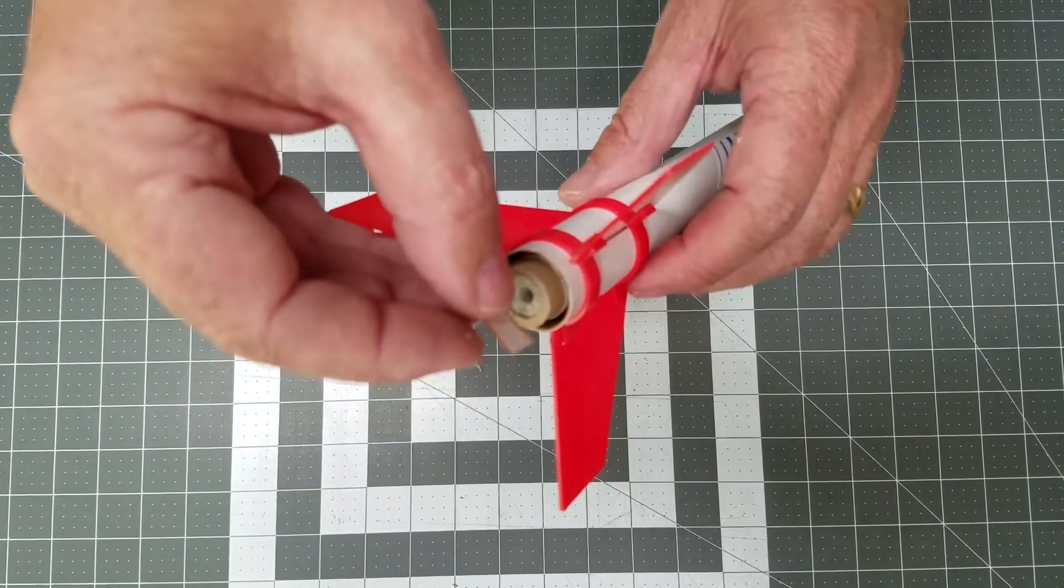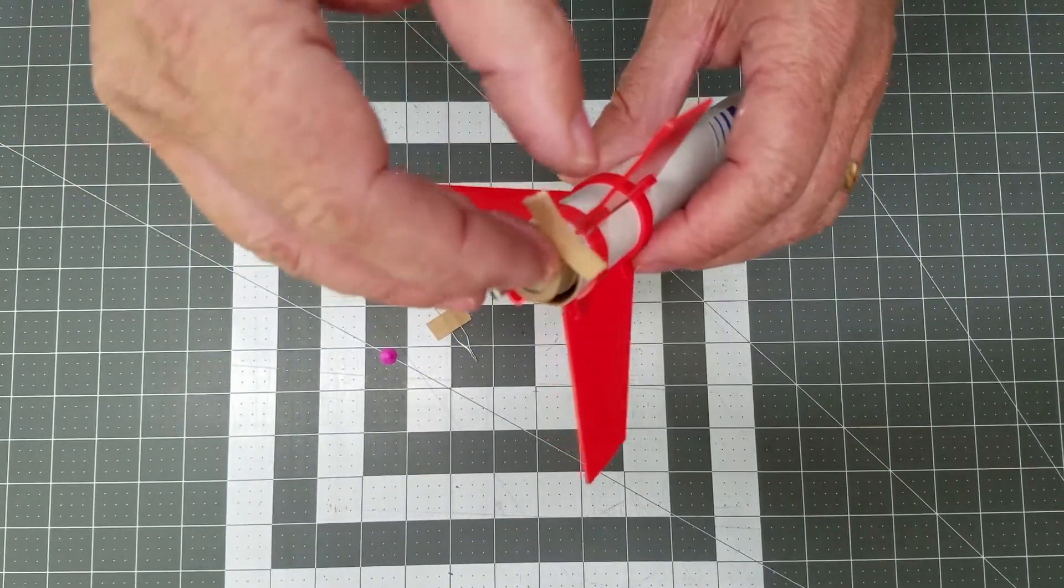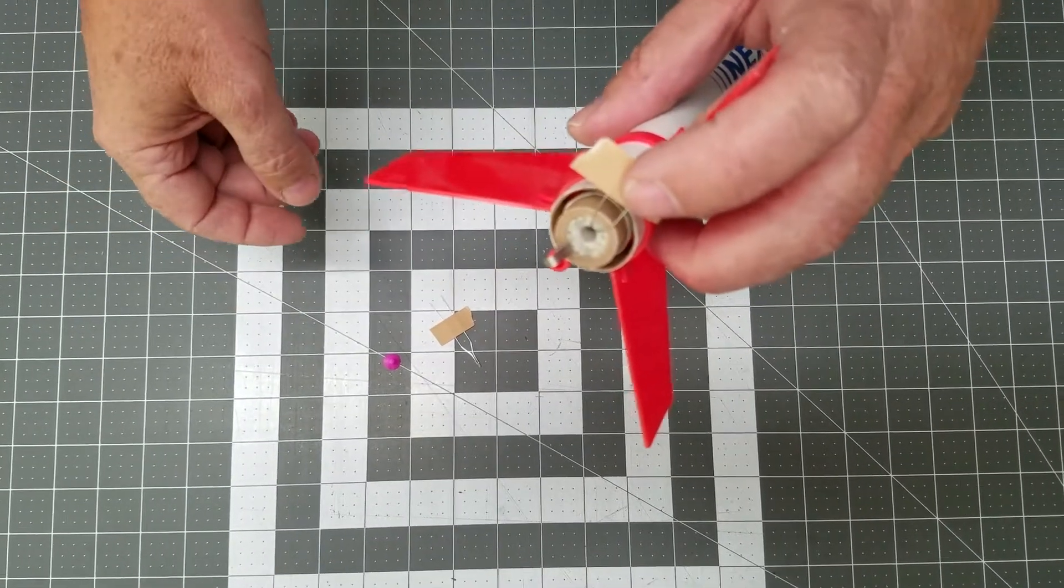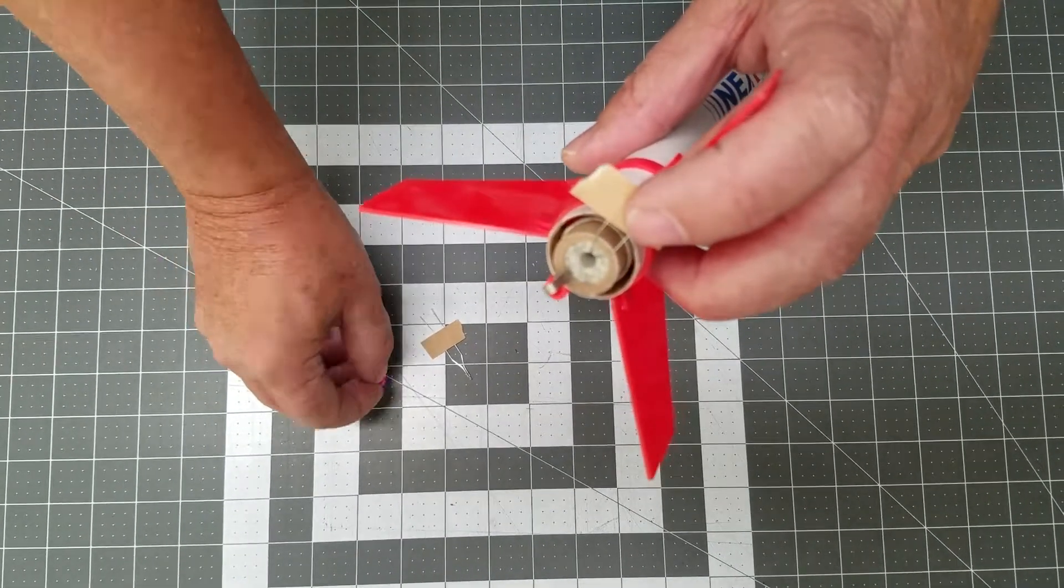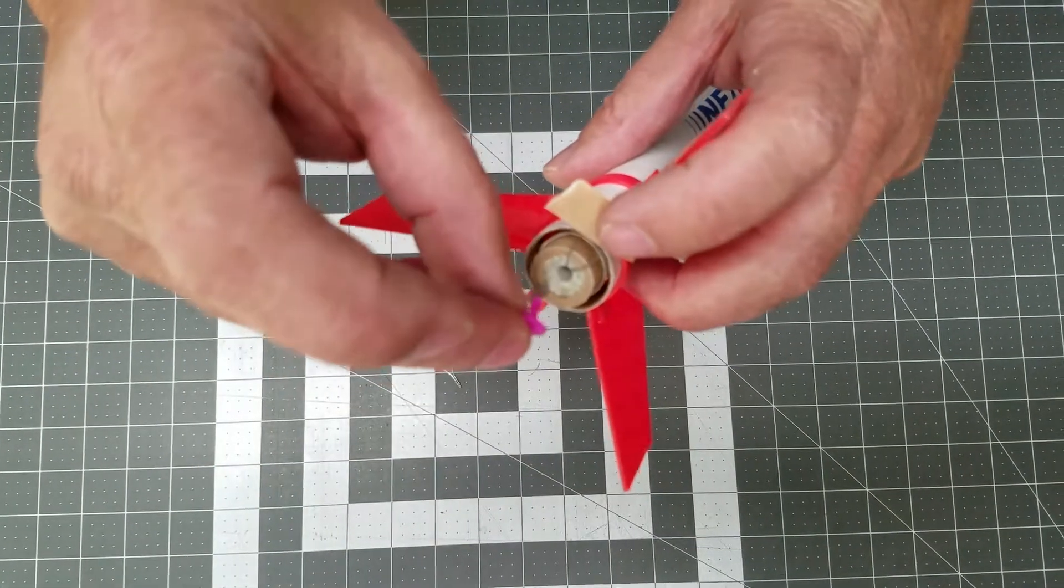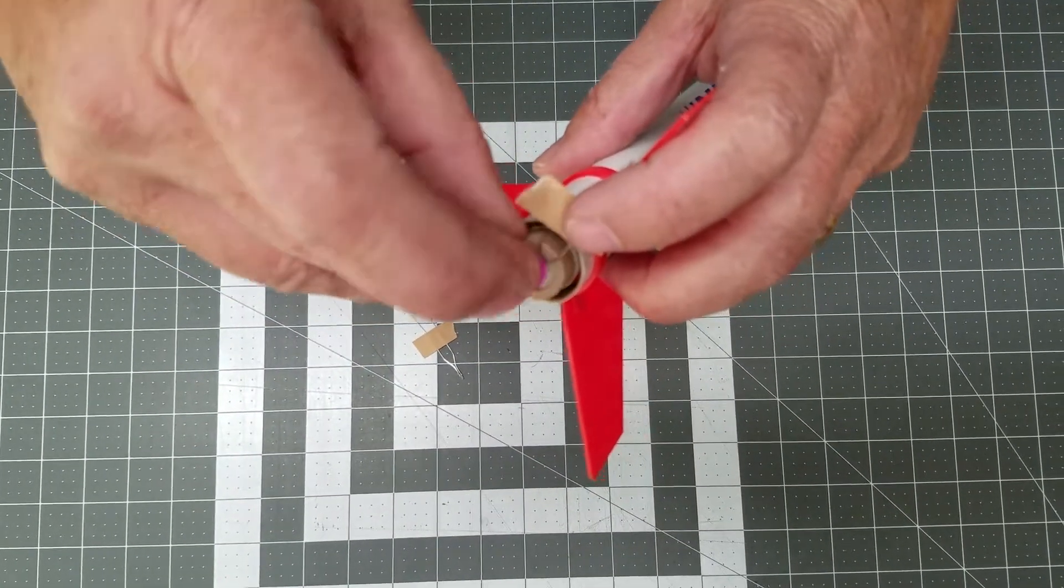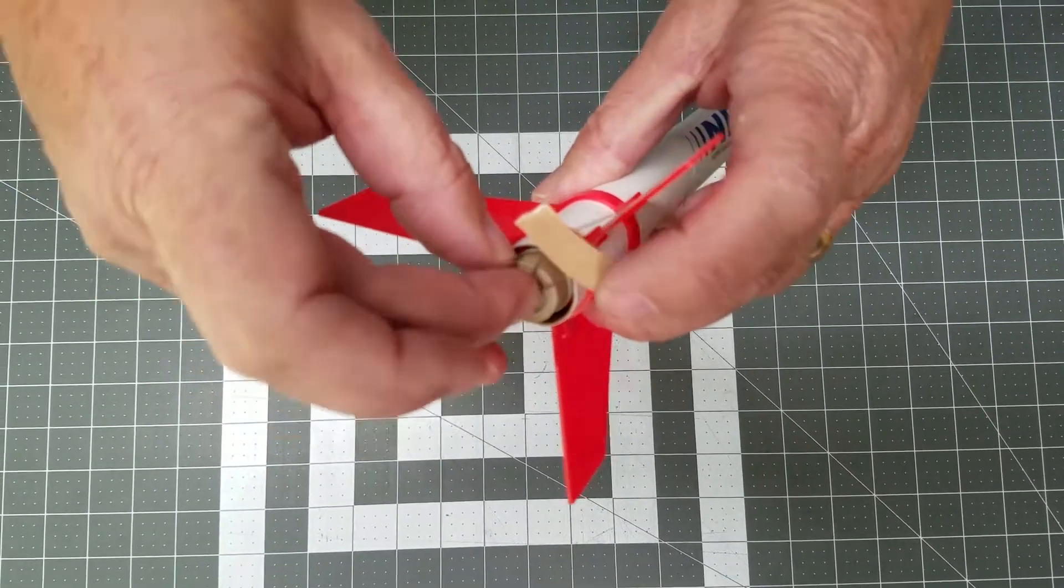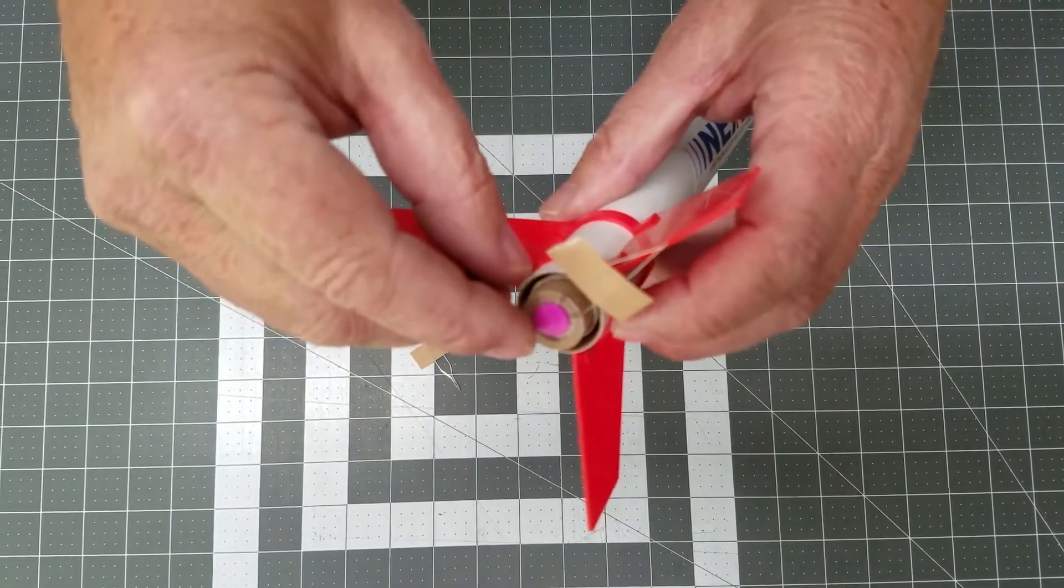Once it's there, bend it over slightly away from the launch lug or motor hook. Then take your motor plug and insert it and push it down flush to hold the igniter in place.